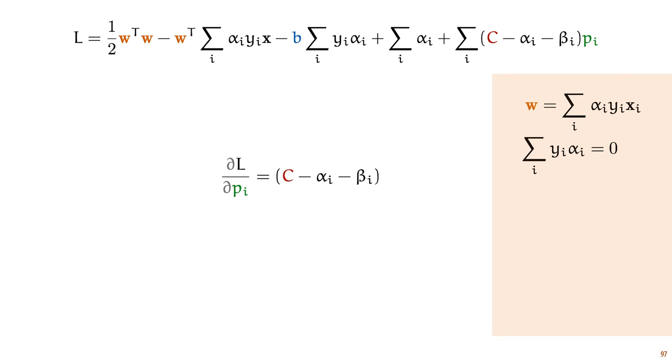So we add that to what we know and we move on to the parameter p. This again occurs only in one term, so we get this simple derivative: c minus alpha_i minus beta_i. If we set this equal to zero, this essentially tells us that alpha_i plus beta_i must always equal c. And we know that both of these are positive, so what we can do is assume that alpha is somewhere between zero and c and we can take beta to be the remainder.